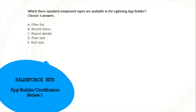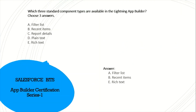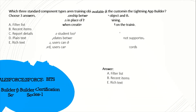Which three standard component types are available in the Lightning App Builder? The options are A: filter list, B: recent items, C: report details, D: plain text, and E: rich text. I think the answer is A, B, and E. Recent items and rich text you can see in the left-hand side panel when you open the App Builder, and filter list lets you filter on that object. Options C and D are not available, so the correct answer is A, B, E.